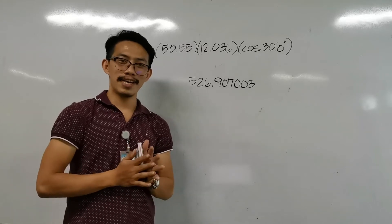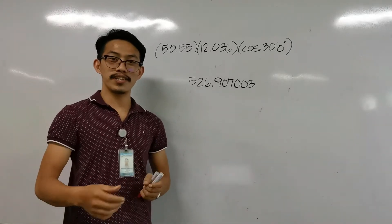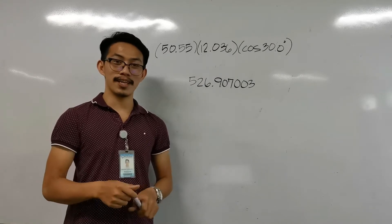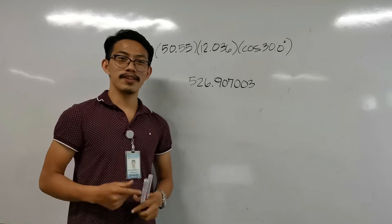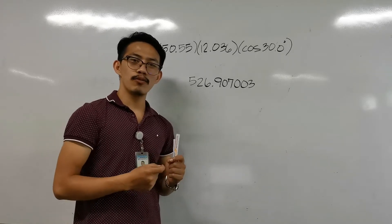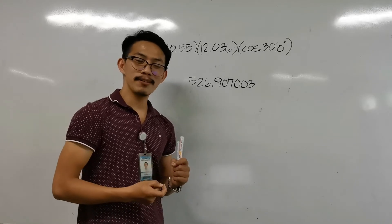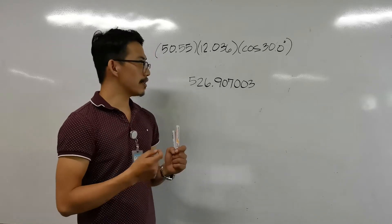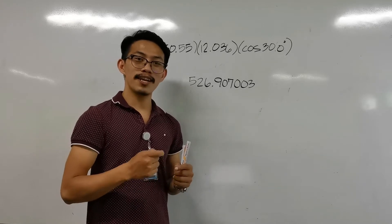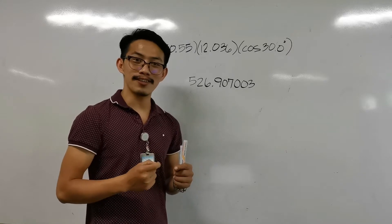Since we are worried that we have addition and subtraction with significant figures, let us proceed with multiplication, division, and trigonometric functions with significant figures. If in addition and subtraction we follow the least precise measurement, in multiplication, division, and trigonometric functions we will follow the number with the least significant figures.